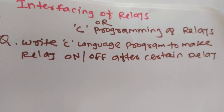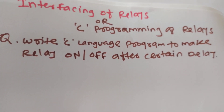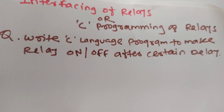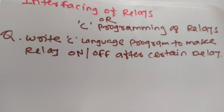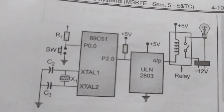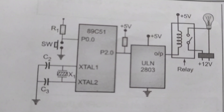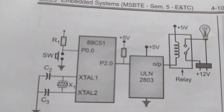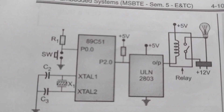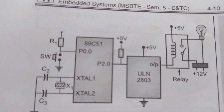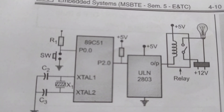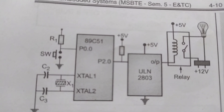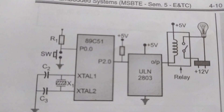An exam question may ask you to write a C language program to turn the relay on or off after a certain delay. For that, we first draw the schematic diagram of the microcontroller along with the relay. In this circuit diagram for interfacing a relay with the microcontroller, pin P0.0 is connected to a switch. When this switch is on, the bulb turns on, and when the switch is off, the bulb turns off.